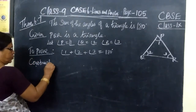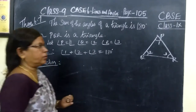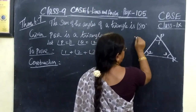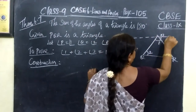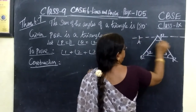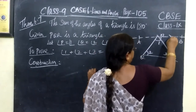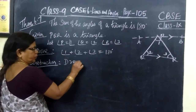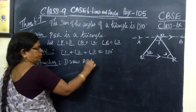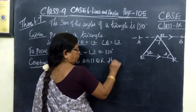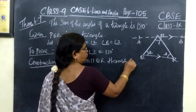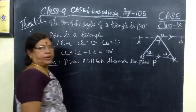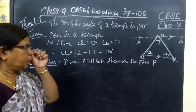Construction: we draw a line AB parallel to QR through the point P.